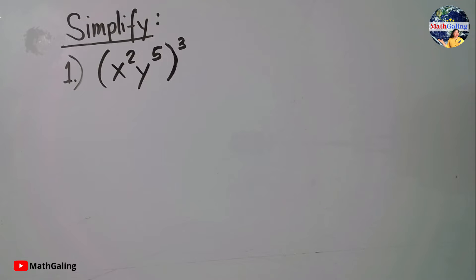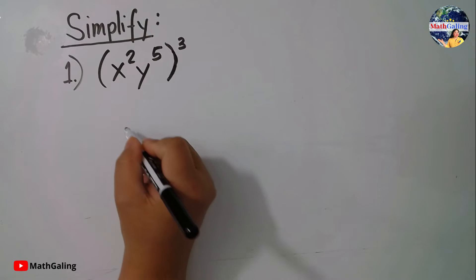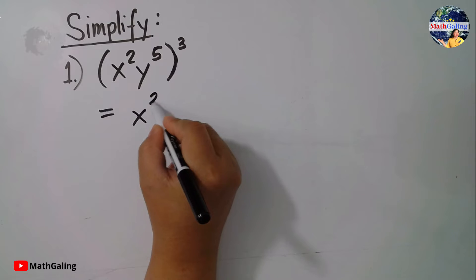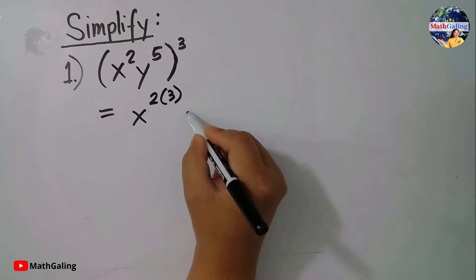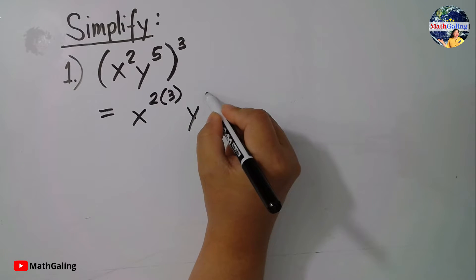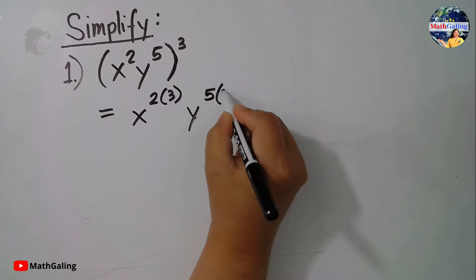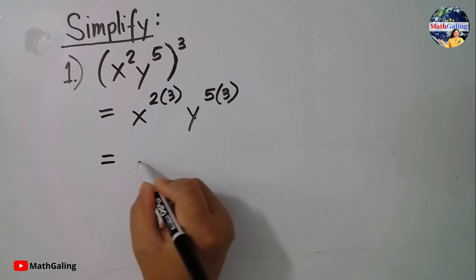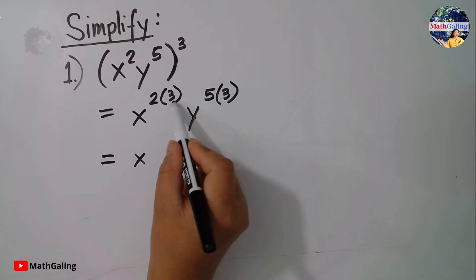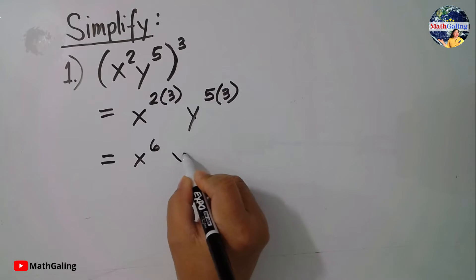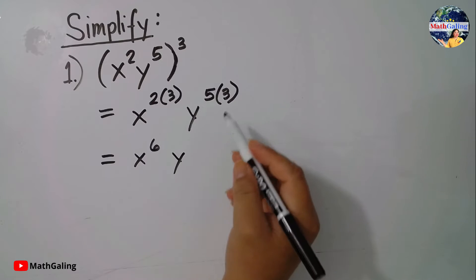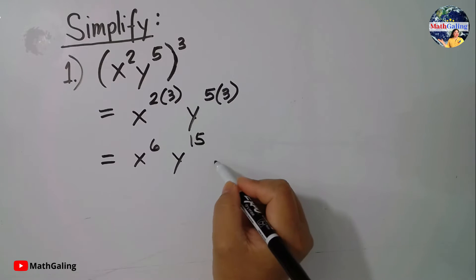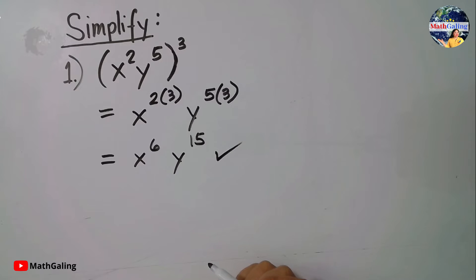For our first number, this will be equal to x with exponent 2 times 3, and base y with power 5 times 3. Simplifying this: 2 times 3 is 6, and 5 times 3 is 15. So the final answer is x to the 6th times y to the 15th.